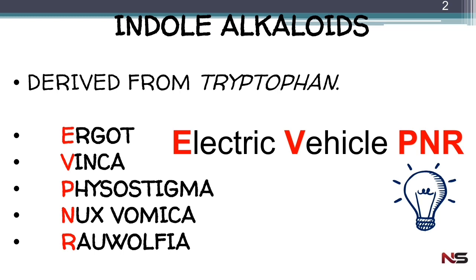For each type of alkaloid — tropane alkaloids, steroidal alkaloids, pyridine alkaloids — we have to see the different drugs in each category. If you have any problem remembering, just use this trick: EVPNR. E represents ergot, V represents vinca, P represents physostigma, N represents nux vomica, and R represents rauwolfia.